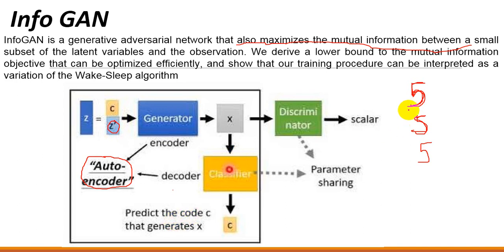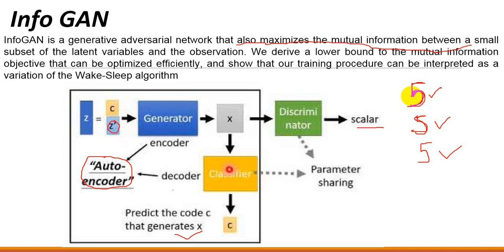In Info GAN, the classifier is able to predict values based on stroke thickness — strong, weak, or very weak. This is called mutual information. The autoencoder encodes and reduces the dimension of the input data. The encoded value is then predicted and converted into a scalar form, allowing the model to classify the stroke darkness or lightness and distinguish between them.